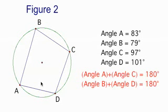Here we have a cyclic quadrilateral. That is to say, a four-sided shape where all four points, A, B, C, and D, are all on a circle.